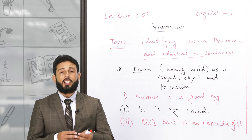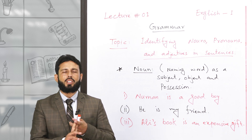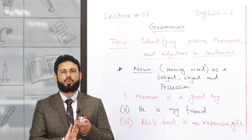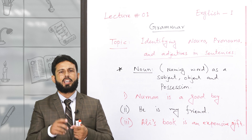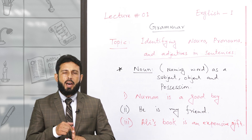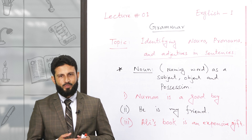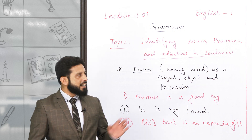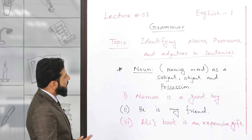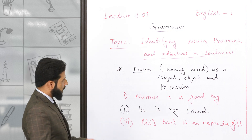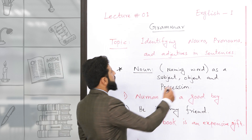لیکن اس کے ساتھ ساتھ ہم یہ بھی کہتے ہیں کہ جب noun ہے تو noun common بھی ہو سکتا ہے، proper بھی ہو سکتا ہے، collective بھی ہو سکتا ہے، material بھی ہو سکتا ہے، compound بھی ہو سکتا ہے، abstract بھی ہو سکتا ہے، concrete بھی ہو سکتا ہے۔ تو آج ہم کریں گے تھوڑی سی practice identifying nouns, pronouns, adjectives in a sentence.